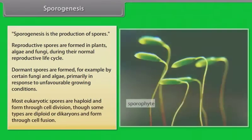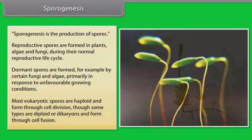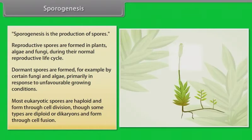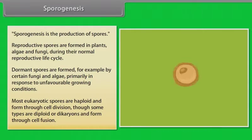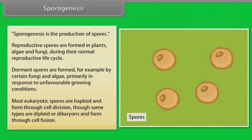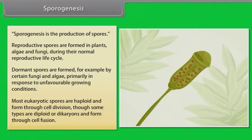Most eukaryotic spores are haploid and formed through cell division, though some types are diploid.